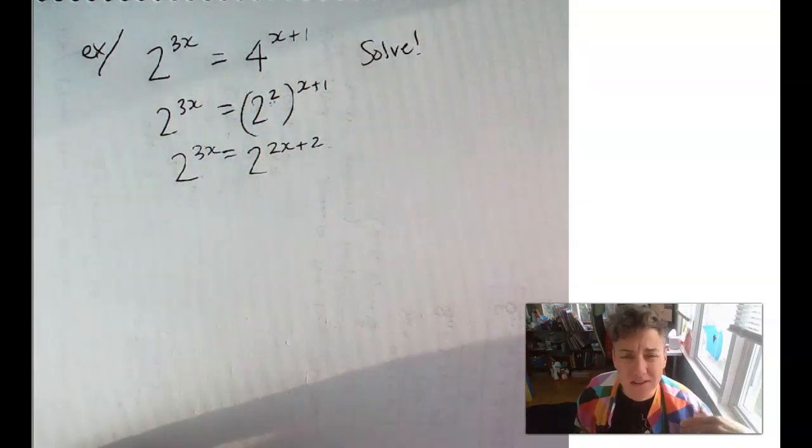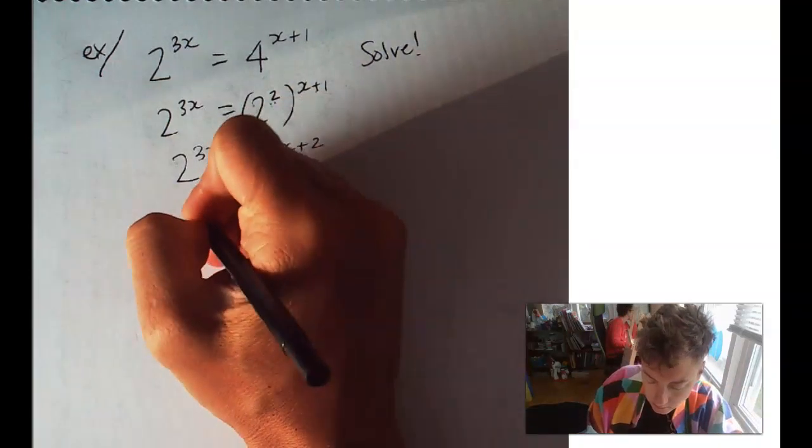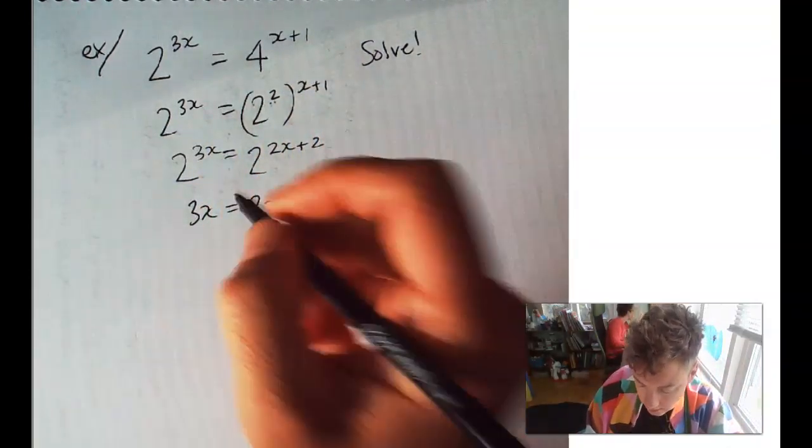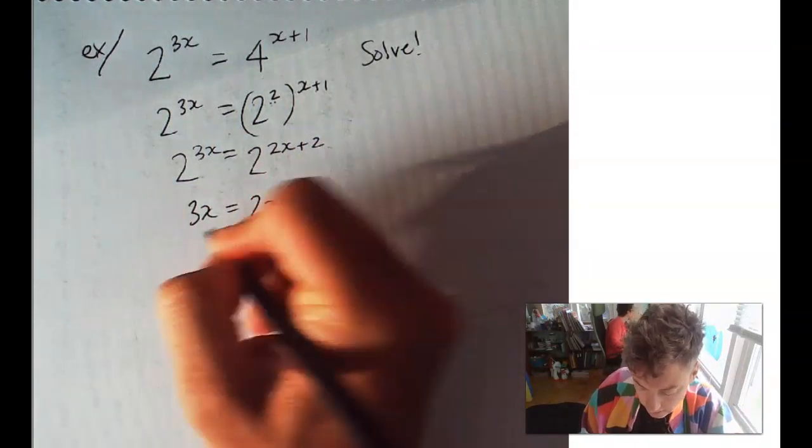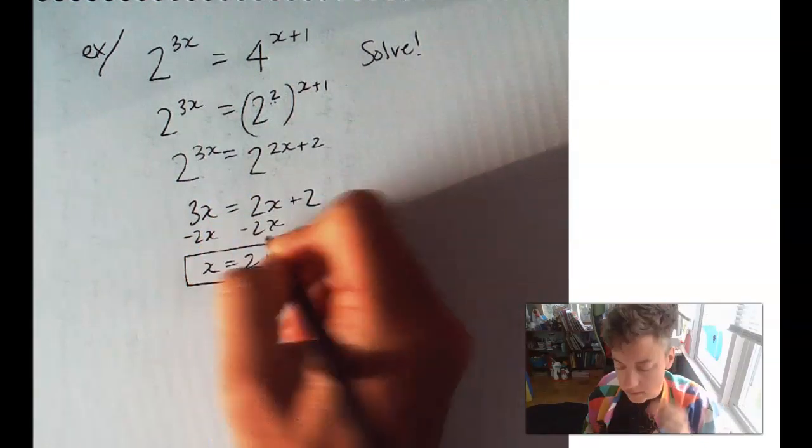The bases are the same, so now we can set the exponents equal to each other. We've got 3x equals 2x plus 2. Subtract 2x on both sides. Et voila! x equals 2.